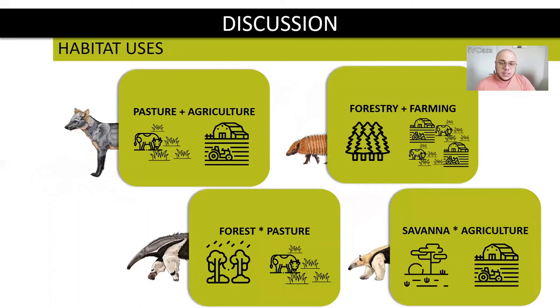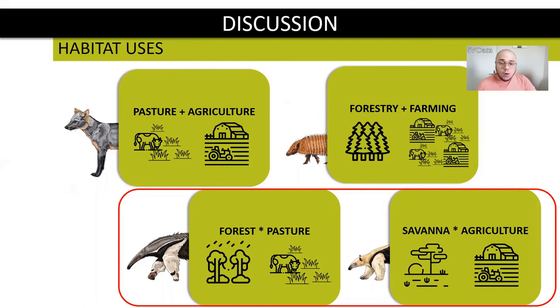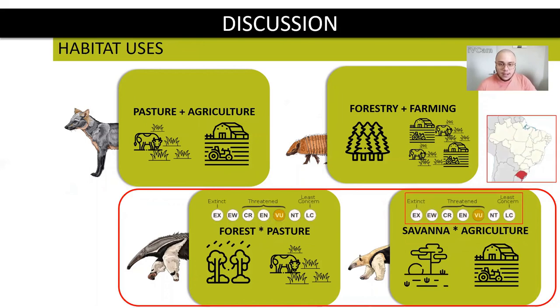Looking at the four species, we can notice a pattern where the two anteaters have more complex models to predict the roadkill risk. This complexity can be related to bigger habitat dependence and more sensibility to matrices. Remember that both species have some degree of threat, and Myrmecophaga tridactyla is vulnerable in some states of Brazil.